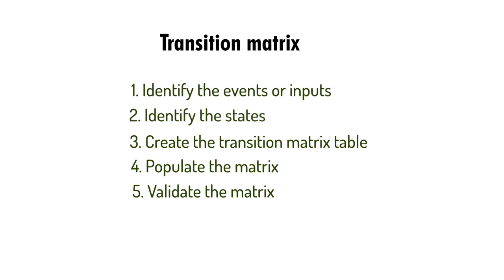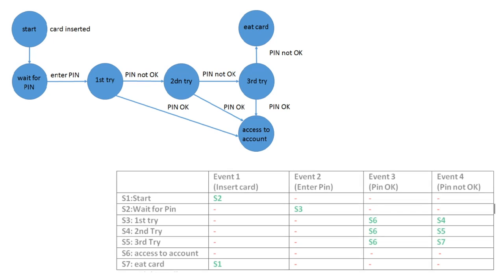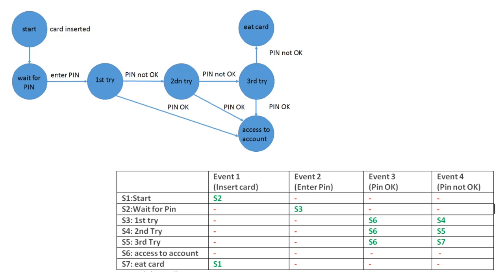Here is an ATM machine state transition diagram where blue circles are states and blue lines are transitions. The states are: Start, Wait for PIN, First Try, Second Try, Third Try, Access Account, and ATM Blocked. The system starts and waits for the card. When the user inserts the card, it moves to Wait for PIN. If the user enters a correct PIN on the first try, they get account access. If failed, they move to a second try. After three failed attempts, the ATM is blocked for some time.